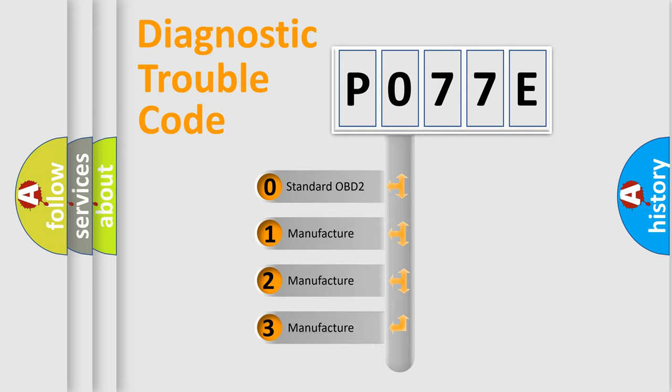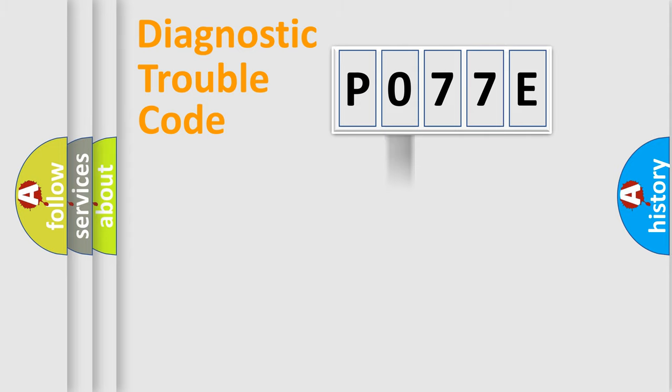If the second character is expressed as zero, it is a standardized error. In the case of numbers 1, 2, or 3, it is a more specific expression of the car-specific error.